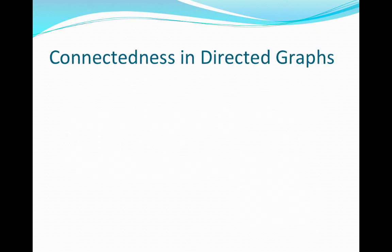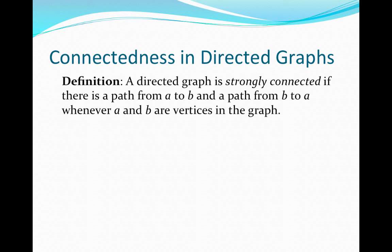We also want to consider connectedness in directed graphs. Recall, a directed graph is one in which the edges have a particular direction, denoted by an arrow. The connectedness of directed graphs has different strengths. We say that a directed graph is strongly connected if there is a path from A to B and a path from B to A whenever A and B are vertices in the graph. Because there is a particular direction of each of the edges, we want to follow that direction and identify a path between any two vertices going in either direction.